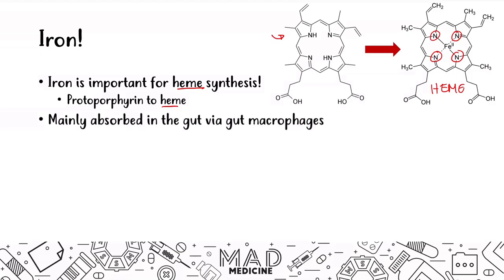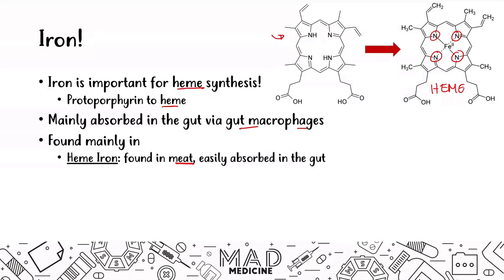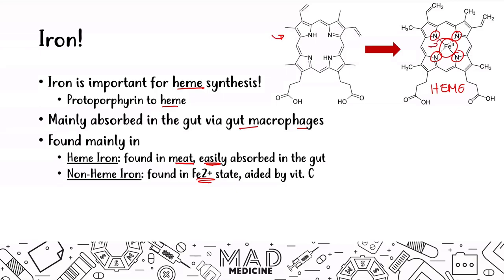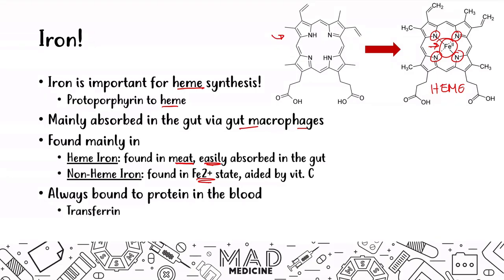Iron is mainly absorbed in the gut, and it is found in the body and in the food we eat in two main forms. We have heme iron, which is found in meat and is readily and easily absorbed in the gut. Then you have non-heme iron, found in the Fe2+ state, and its absorption is aided by vitamin C. Iron is always bound in the blood to a protein — the key ones to know for Step 1 are transferrin and ferritin.